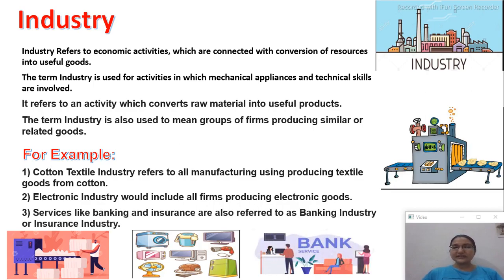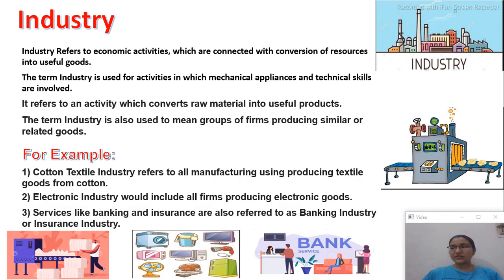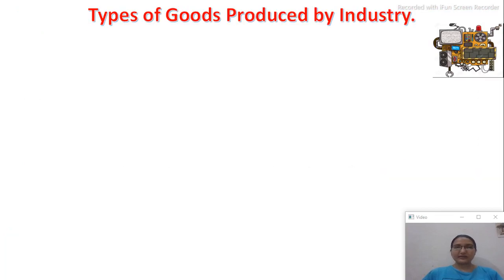Services like banking and insurance are also referred to as the banking industry and insurance industry. If you have a business, you need banking for your income and investments, and you also need insurance. So banking and insurance are also considered industries. Now we are going to focus on types of goods produced by industries.